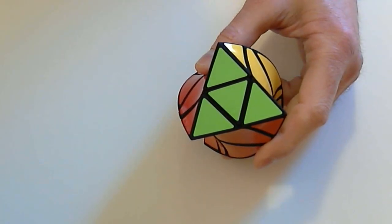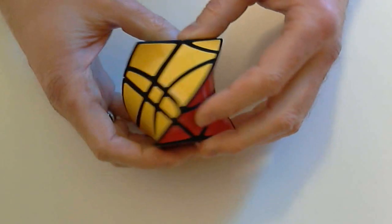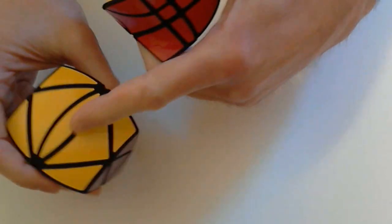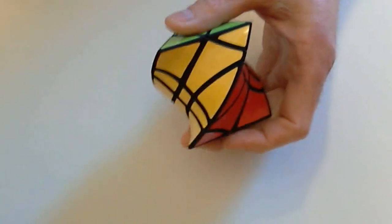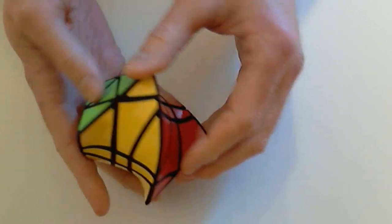However, Tricopter Twist does have an additional challenge, as these pieces, the equivalent of these pieces on the previous puzzles, must be oriented correctly to be solved.